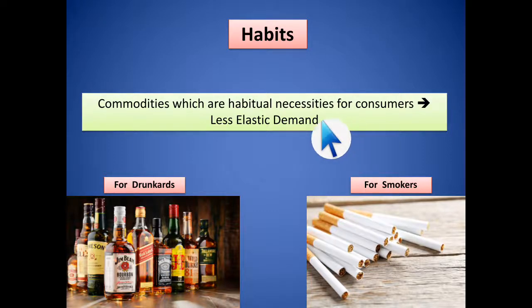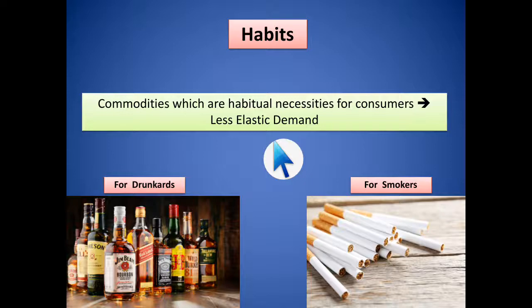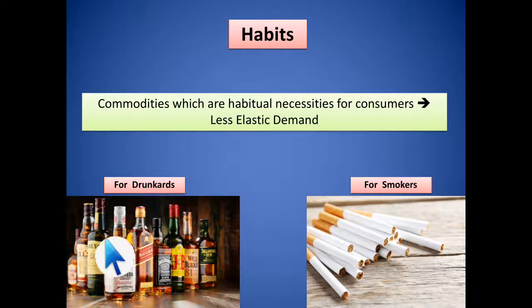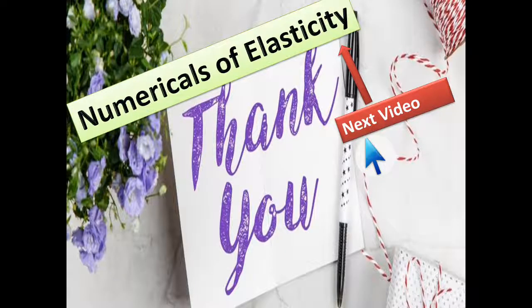The ninth factor is habits. Commodities which are habitual necessities for consumers will have less elastic demand. For example, alcohol for drunkards and cigarettes for smokers: a drunkard has the habit of consuming alcohol every day, so whether the price increases or decreases, it will not affect their consumption behavior. The price change does not affect demand, so habitual necessities result in less elastic demand.